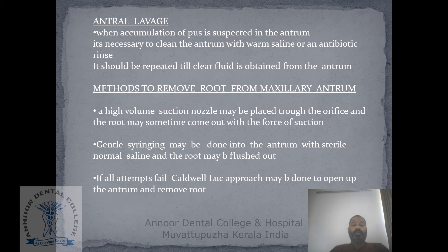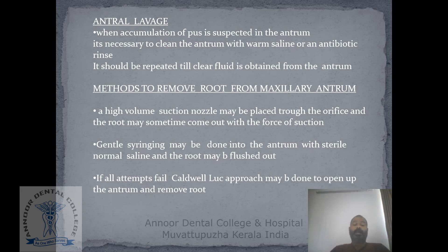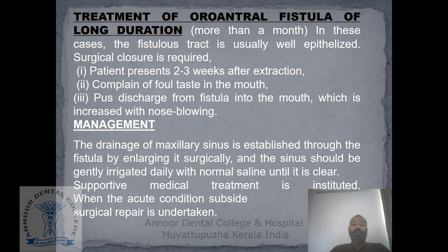The methods to remove a root from the maxillary sinus include using a high volume suction tip number five, which could be placed inside the socket, with copious irrigation of saline flushed into it in order to remove the root from the maxillary sinus. If that attempt fails, then you can go for Caldwell-Luc surgery.